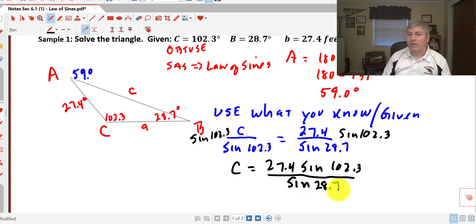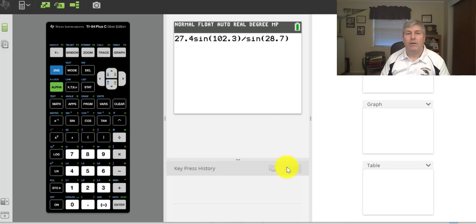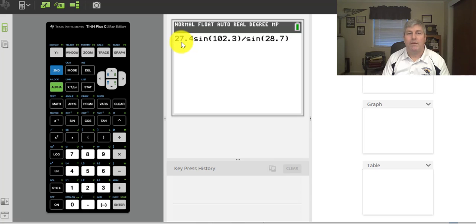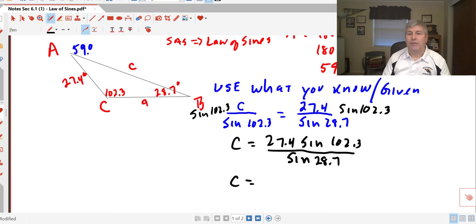I want to solve for C, so I just have to multiply both sides by the sine of 102.3. I get C equals 27.4 sine of 102.3 all over the sine of 28.7. Just a reminder, I don't really care what the sine of 102.3 is. I don't care what the sine of 28.7 is. You don't have to find those numbers out. Your calculator will do that work for you. I can go right to my calculator and put it in in that calculator ready form. I have 27.4 times the sine of 102.3 in degree mode divided by the sine of 28.7, which gives me 55.74 or 55.7 for side C.